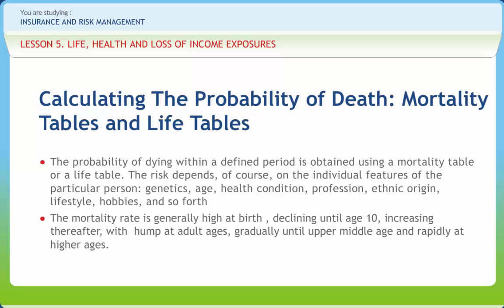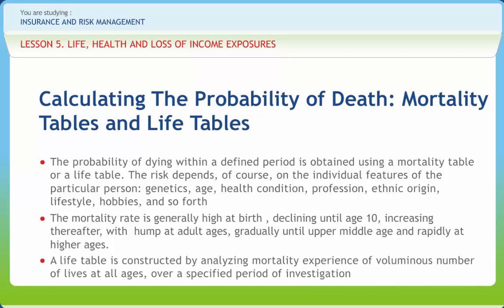A life table or survival table shows how many people are expected to survive at each age out of an initial population. It reflects either the probability of survival — one minus the probability of dying — or the number of people surviving at each age. Mortality tables and life tables are essential tools for actuaries. A life table can be constructed by following a cohort of people born during a particular year over a long period, recording all deaths until the last one dies.